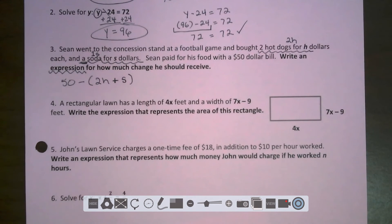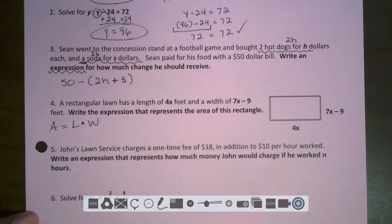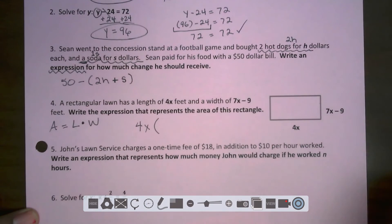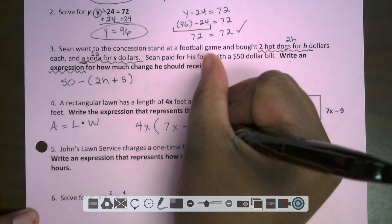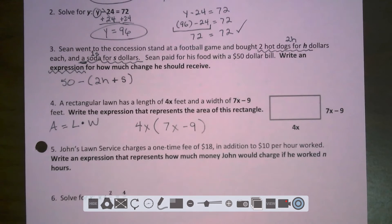Number four. A rectangular lawn has a length of 4X feet and a width of 7X minus 9 feet. Write the expression that represents the area of this rectangle. We know that area of rectangles equals length times the width. So that means I'm taking my length of 4X and I'm going to multiply that by my width of 7X minus 9. They just wanted an expression that represented, so we're not going to simplify it.